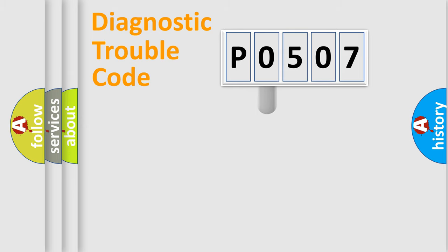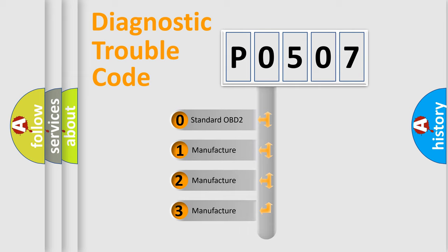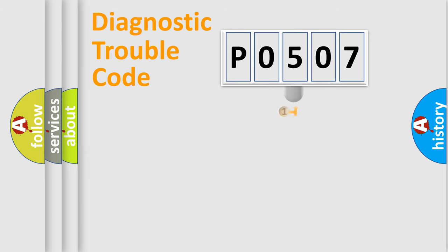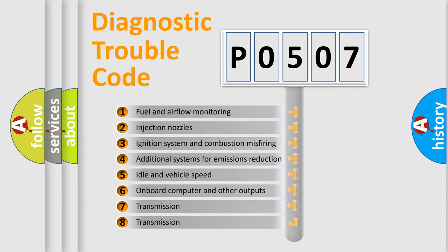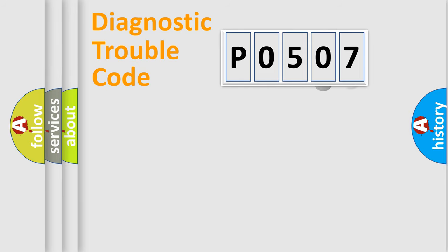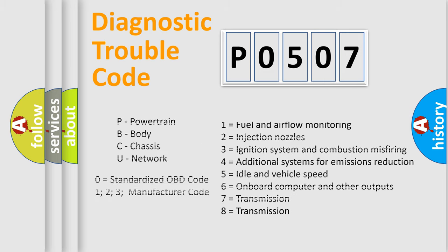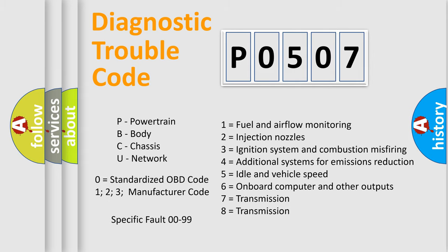This distribution is defined in the first character of the code. If the second character is expressed as zero, it is a standardized error. In the case of numbers 1, 2, or 3, it is a more specific car-manufacturer error. The third character specifies a subset of errors, and the last two characters define the specific fault of the group. This division is valid only when the second character is zero.